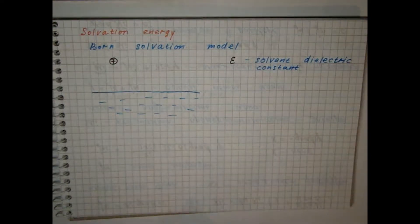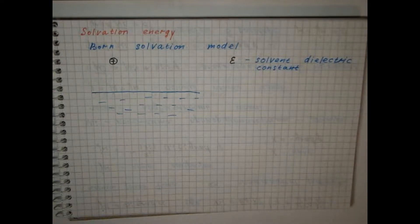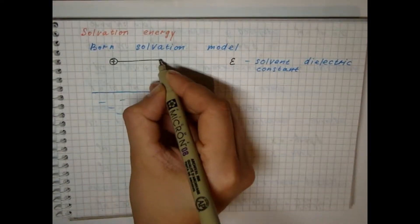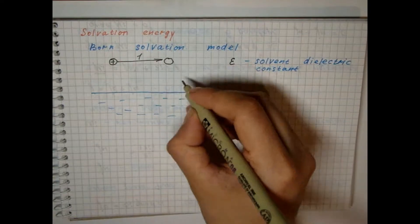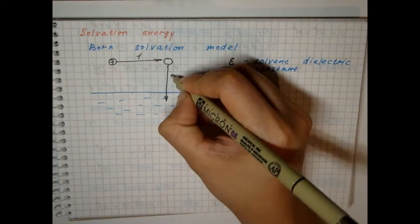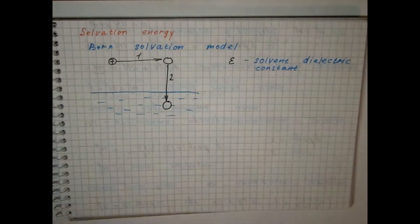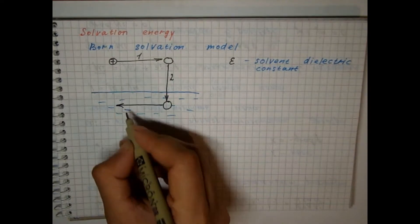The process of transferring a charged ball from vacuum to medium is divided into three stages. The first – ball discharge in vacuum, second – transferring charged ball from vacuum to solvent, third – charging of the ball in the medium.